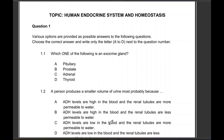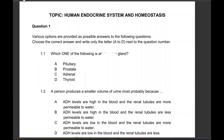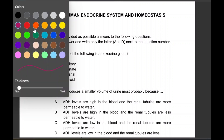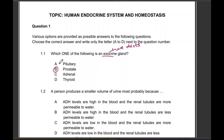Which one of the following is an exocrine gland? Exocrine glands are glands that have ducts. Whatever they secrete gets secreted into the ducts and transported by the ducts. So the correct answer here will be the prostate gland.